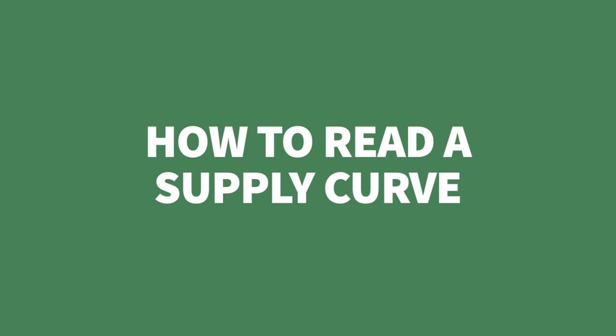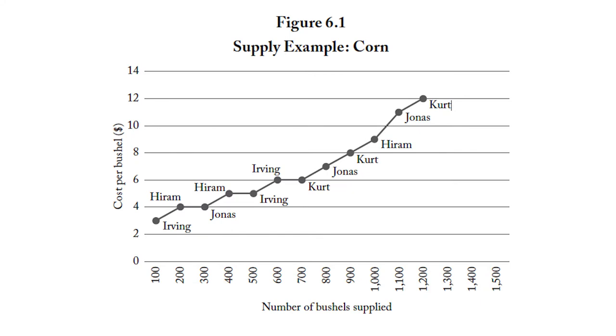There are two kinds of information represented on a supply curve. If we start with the cost per bushel and go across to the supply curve, it tells us the quantity supplied at that cost. At a price of $8, the quantity supplied is nine hundred bushels. If you start with a price on the vertical axis and go across to the supply curve, it gives you the quantity supplied at that price.